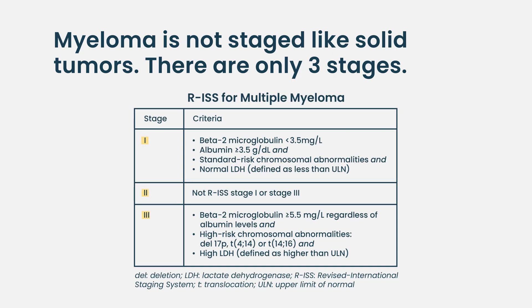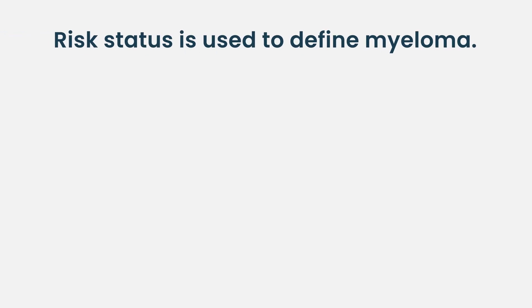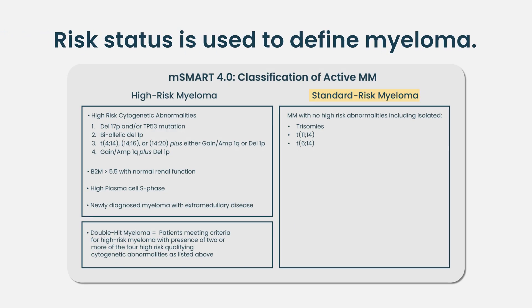Myeloma actually has three different staging systems, but they all go from one to three. However, that staging is not really how we describe or treat patients — we don't treat stage 1 differently from stage 3. Instead, we define myeloma as being standard risk or high risk. In general, a standard-risk patient and a high-risk patient respond similarly to therapy, but the high-risk patient will unfortunately relapse sooner.